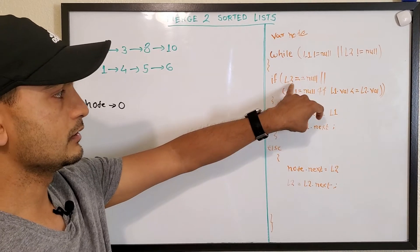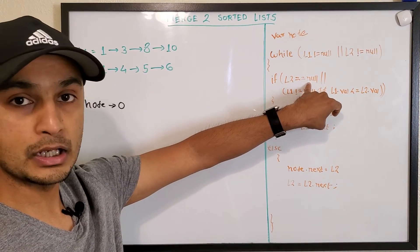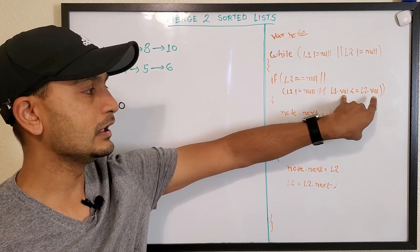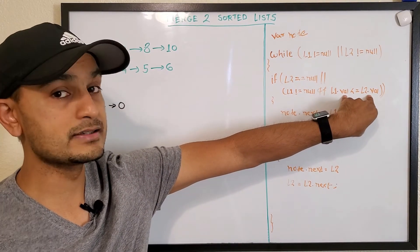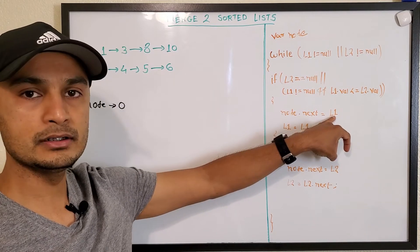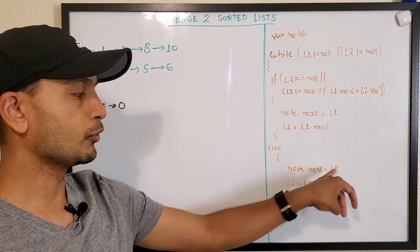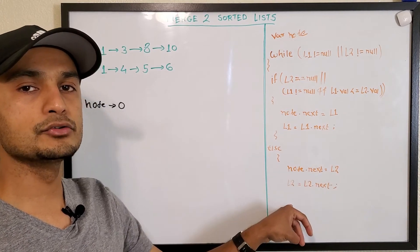What we do is if L2 is equal to null or L1 is not equal to null and L1's value is less than or equal to L2's value, then node points to L1 and L1 moves to next. Else, node points to L2 and L2 moves to next.